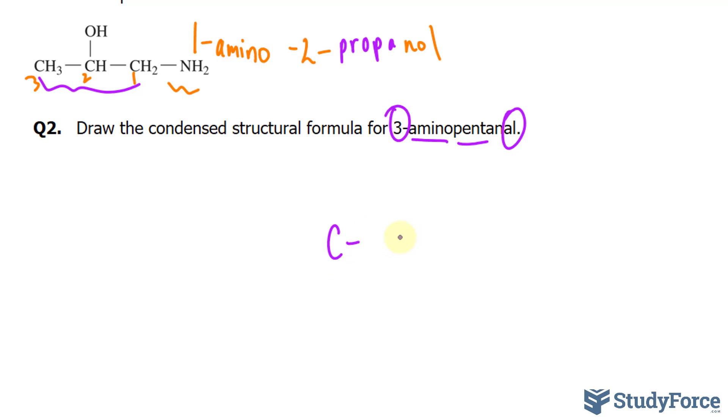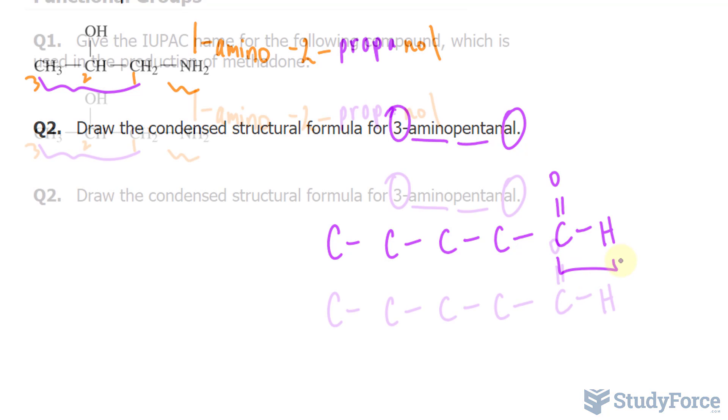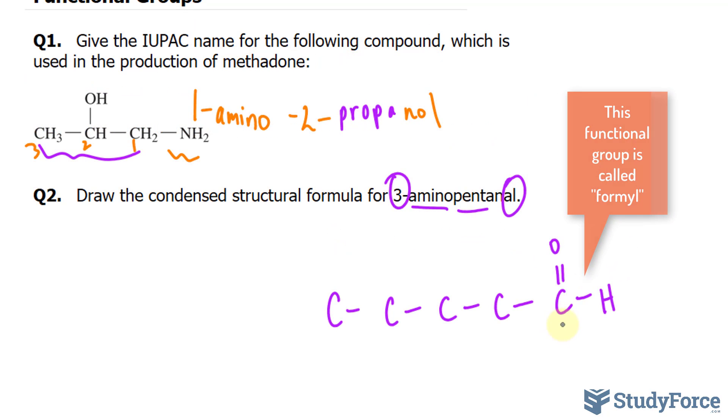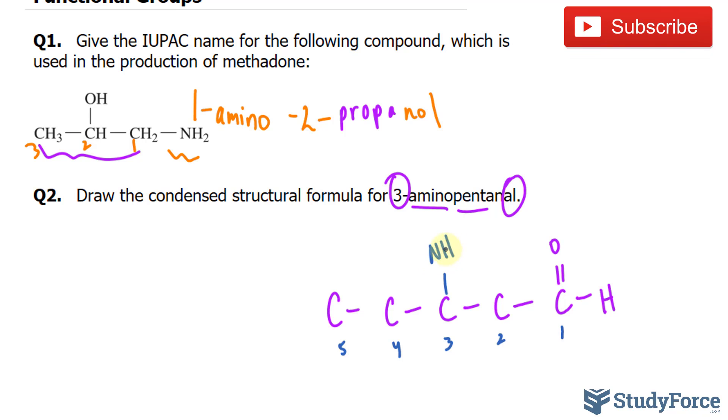So since it's pent, we have five carbons. Let's draw the backbone. And we'll call this carbon the carbon that has the functional group shown here for the aldehyde. We'll start counting the carbons from here: 1, 2, 3, 4, 5. And place the amino or amine right here, NH2.